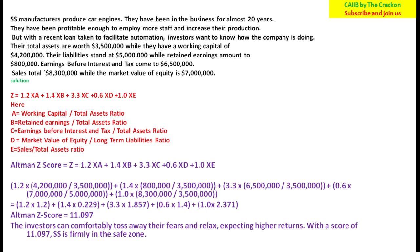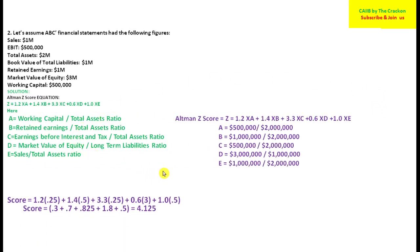Now let's solve question number two. The financial statement of ABC company is given: sales = 1 million, EBIT = 5 lakhs, total assets = 2 million, book value of total liabilities = 1 million, retained earnings = 1 million, market value of equity = 3 million, and working capital = 5 lakhs. We apply the same Altman Z-Score formula.